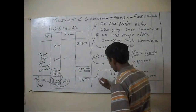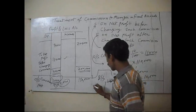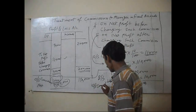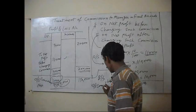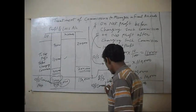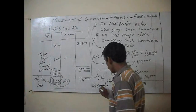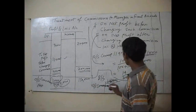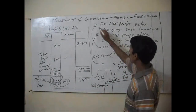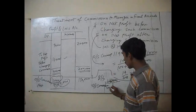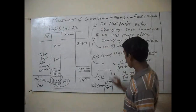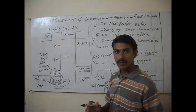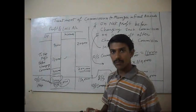In the balance sheet, we will show outstanding commission. In the second case, the outstanding commission is ten thousand. Okay, thank you very much.